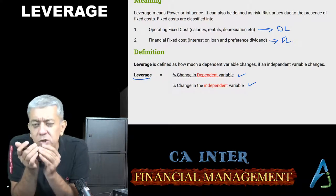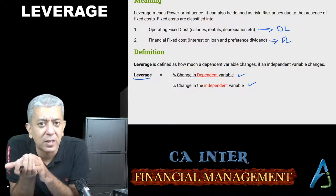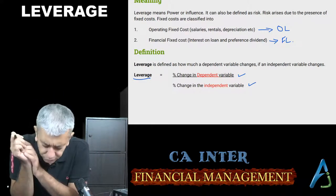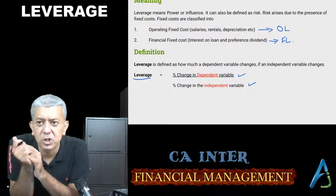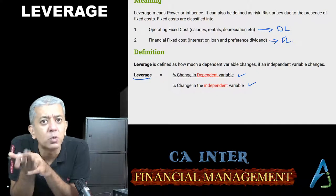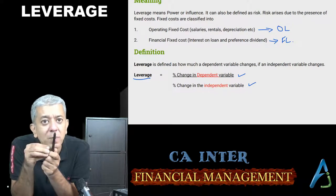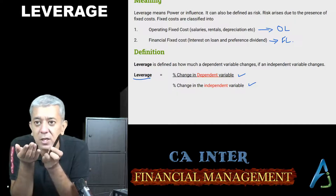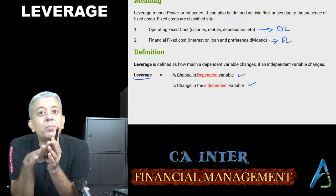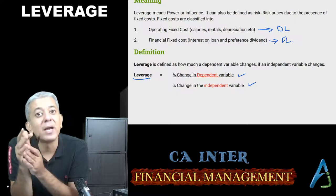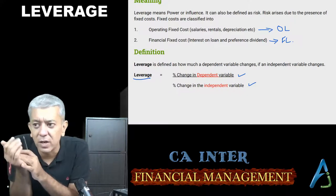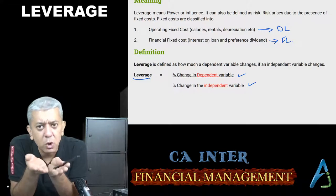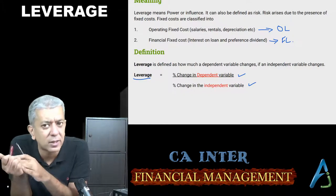Independent variable woh hota hai jisko dependent variable se farak nahi padta. Aur dependent variable is affected by the independent variable. For example, agar stock exchange upar neeche jaata hai, chhoti moti companies ka shares khud ba khud upar neeche chala jaata hai. So stock market is the independent variable and small companies are the dependent variable. Similarly, a country's economy might be the independent variable, and the stock exchange becomes the dependent variable — agar economy achha jaata hai, toh stock exchange automatically long run mein achha hi jaata hai.